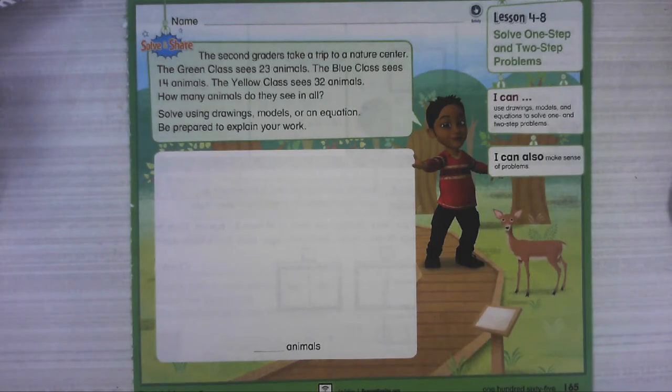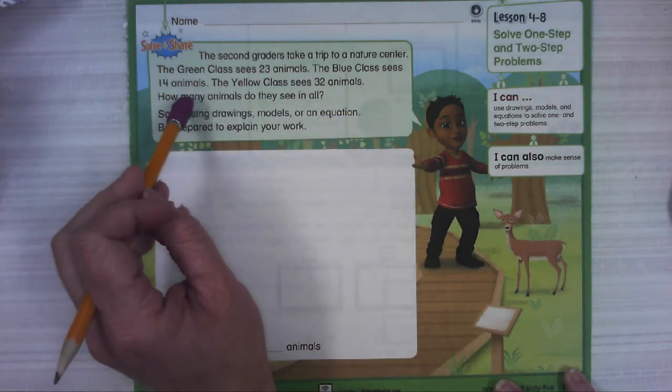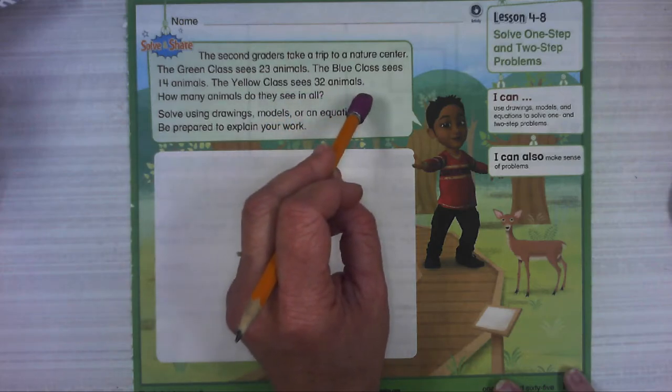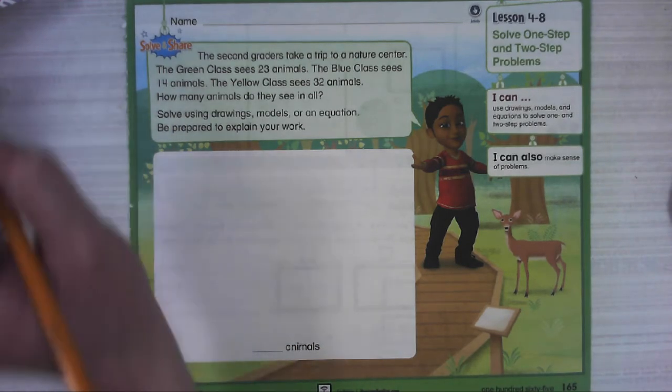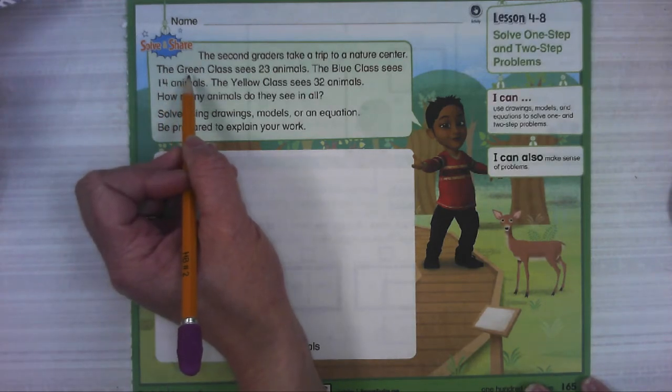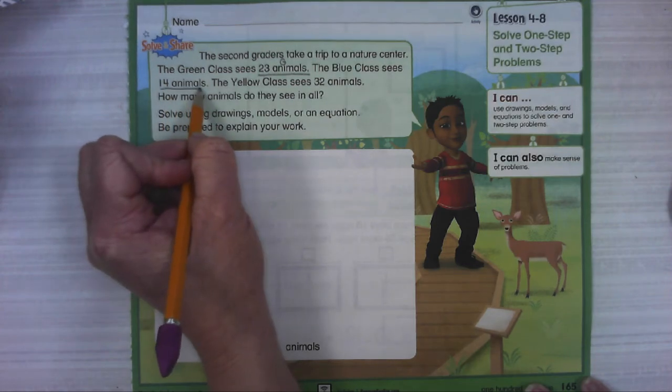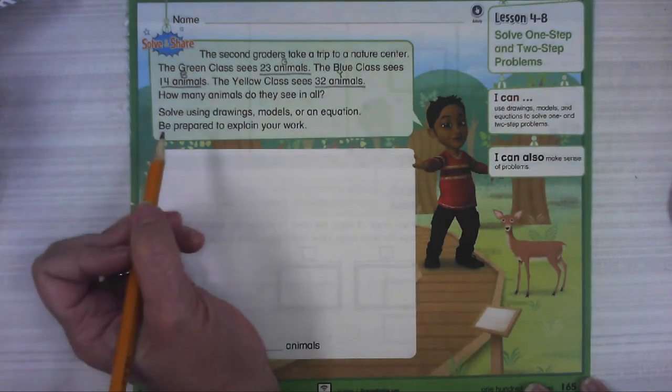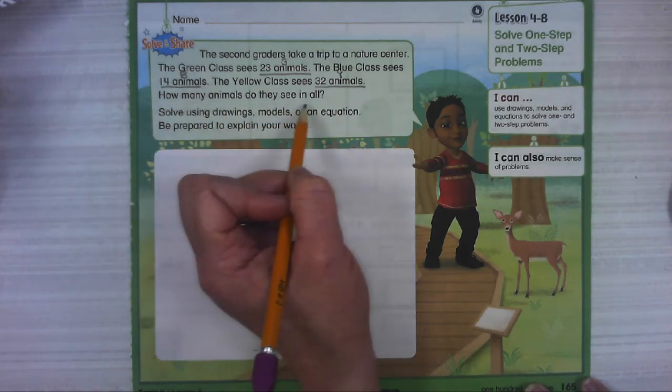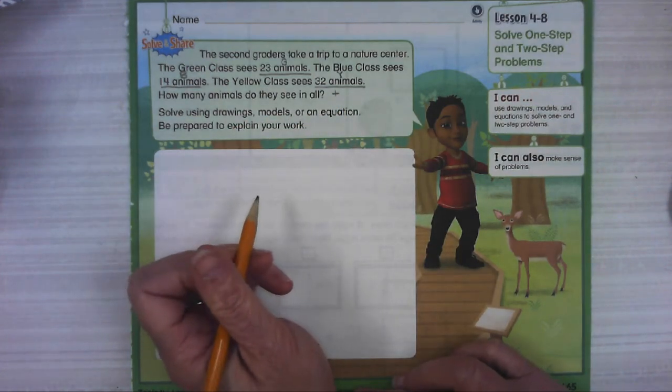I'm going to read the question one more time, and we're going to break it down. The green class sees 23 animals. I'm going to underline that and put a G for green. The blue class sees 14 animals. I'm going to put a B for blue. The yellow class sees 32 animals and a Y for yellow. If we're putting them all together, that's combining, and combining means addition. So let's create our equation: 23 plus 14 plus 32.